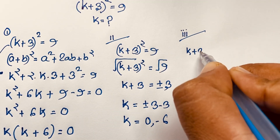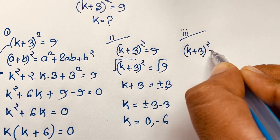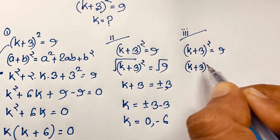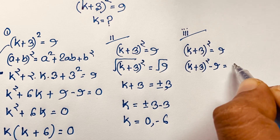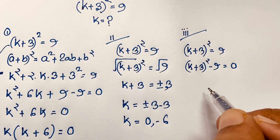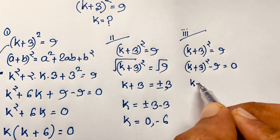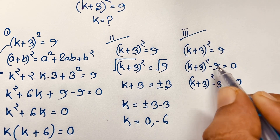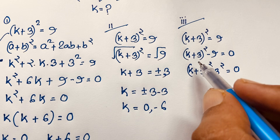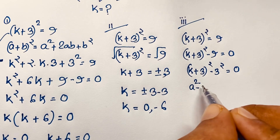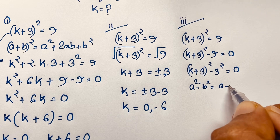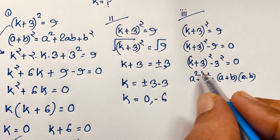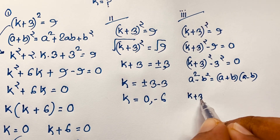Now I solve this question using another method. Our question is (k + 3)² = 9. I move the 9 to this side to get (k + 3)² − 9 = 0, which is (k + 3)² − 3² = 0. Now I apply the identity a² − b² = (a + b)(a − b).